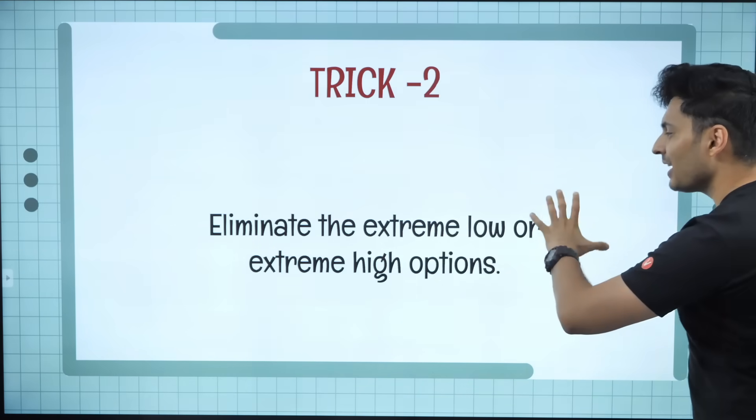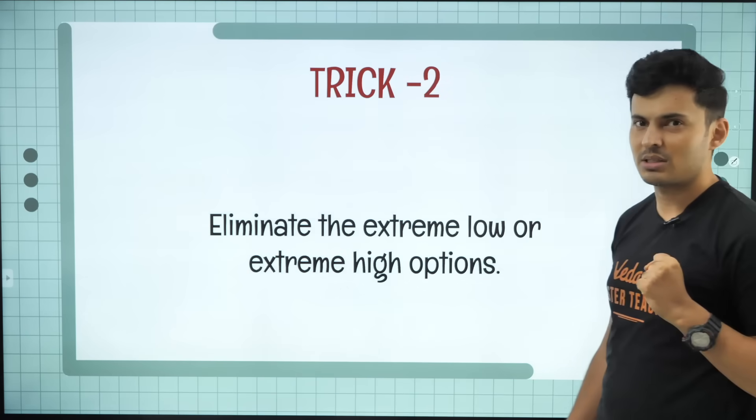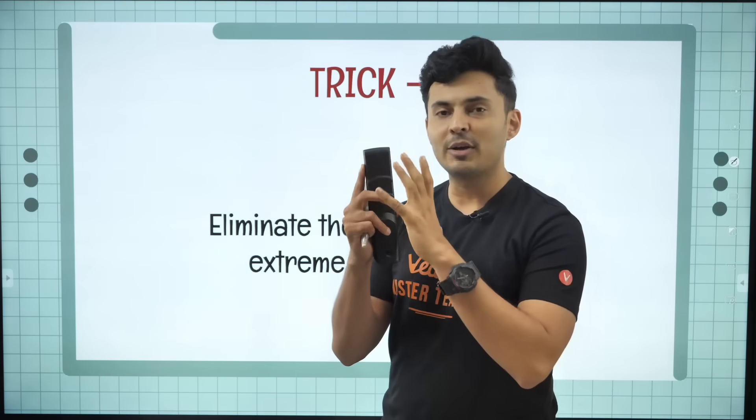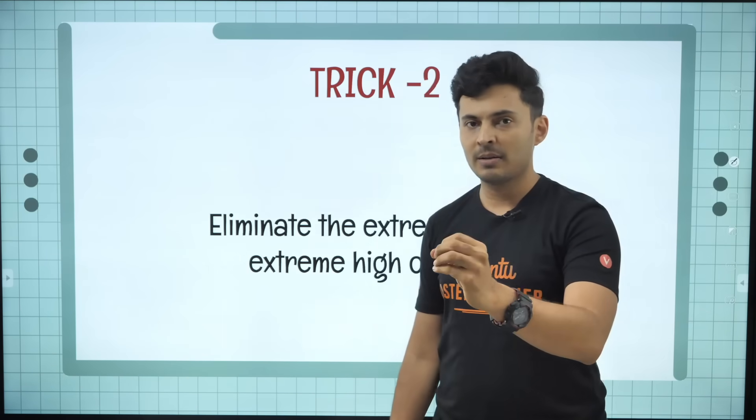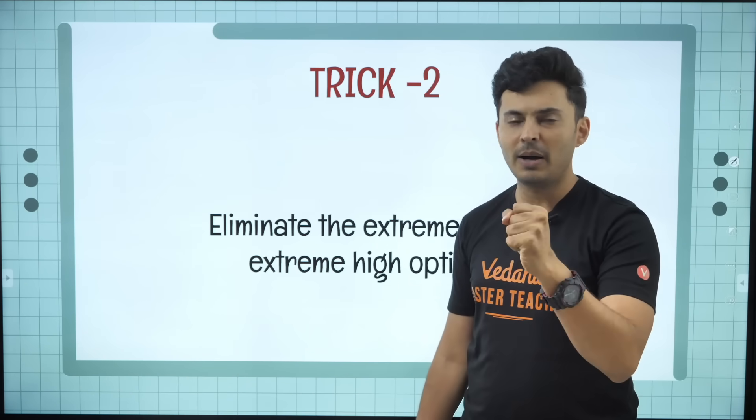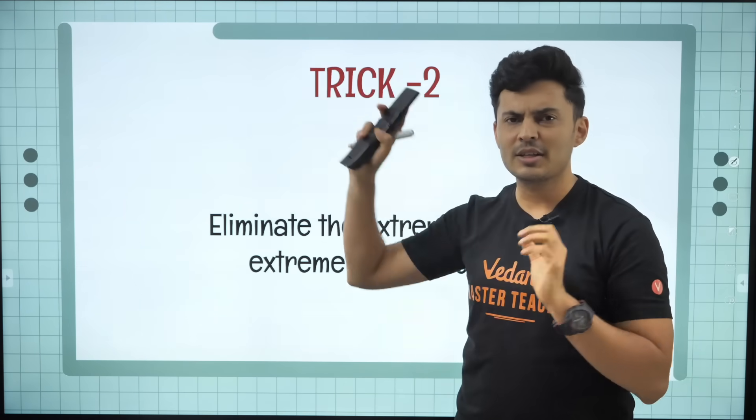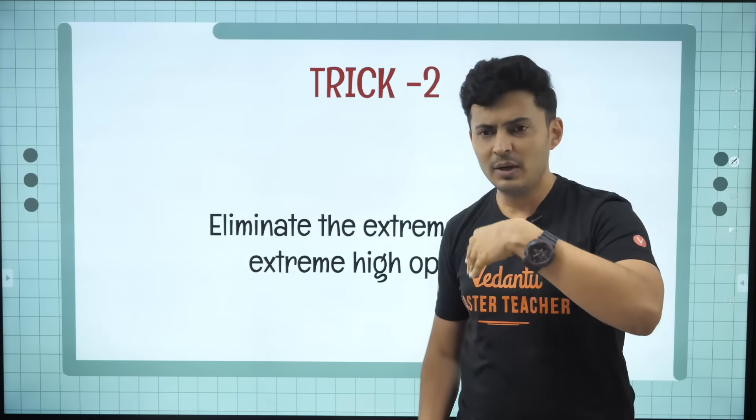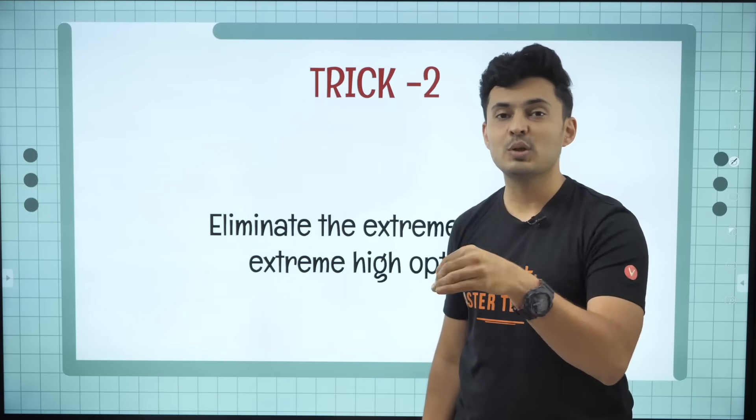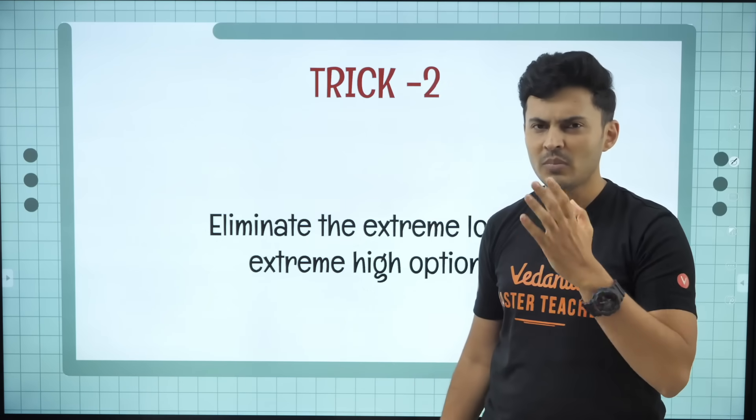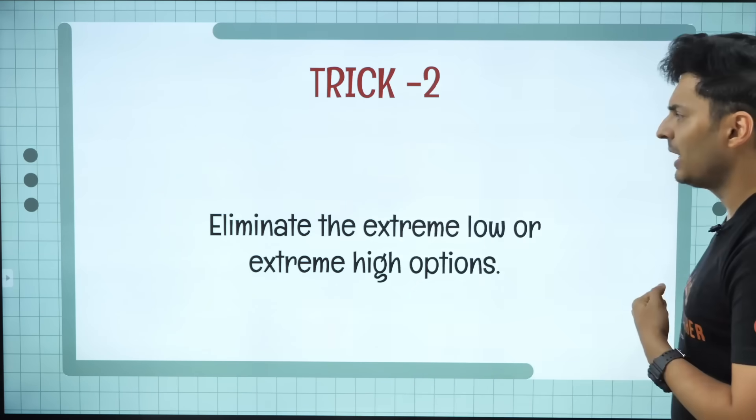So you can eliminate the extremely low or extremely high options. Generally the examiner will try to hide the correct answer somewhere in the middle part, somewhere which is the average. It will not be generally the highest or the lowest values. He will try to confuse you between values which are very very similar. So let's see how do you apply this trick.